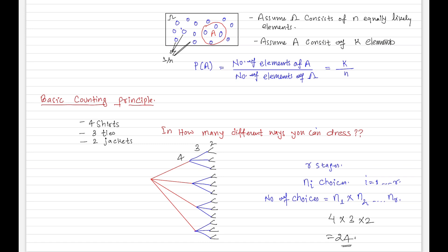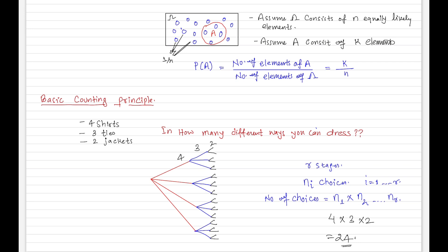We saw this through an outfit example: at the first stage we have four shirts to wear, at the second stage we have three ties to wear for each shirt, and at the third stage we have two jackets for each shirt-and-tie combination. To find the total number of possible outfits, we multiply the number of choices at each stage. That is quite intuitive. Now let's take more examples based on this.